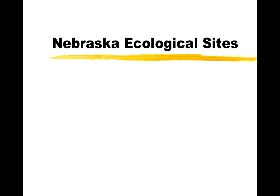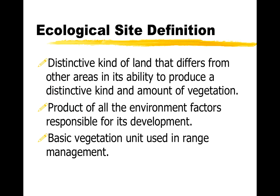This recording is about the ecological sites used in Nebraska's range management. First, we want to identify the sites and understand what they mean, then go through each of the 12 sites. A site, by definition, is a distinctive type of land that differs from the area around it in its ability to produce a kind and amount of vegetation. Each site is a product of all those environmental factors responsible for its development. We use ecological sites as the basic vegetation unit in range management.